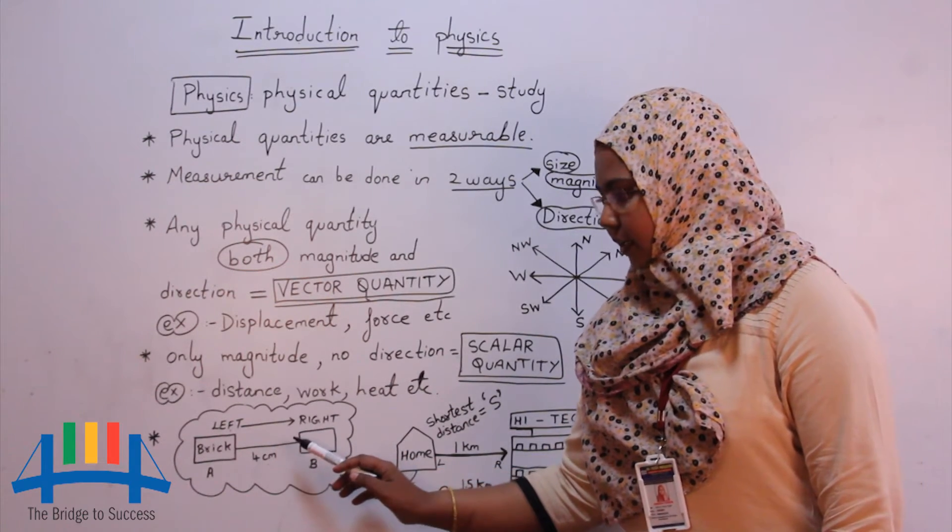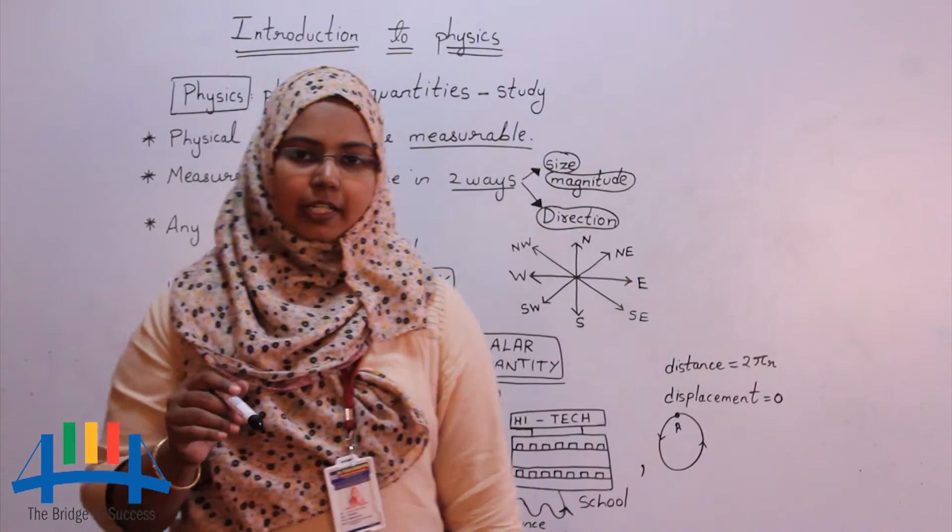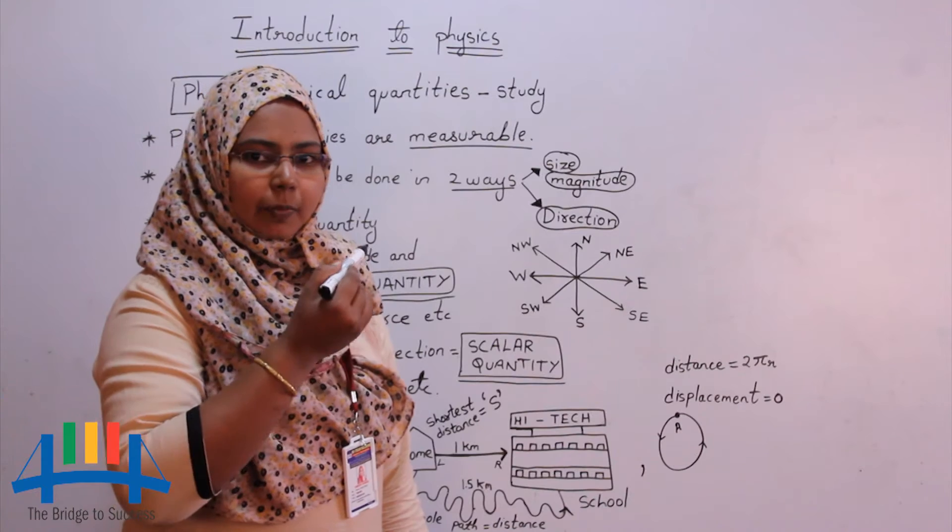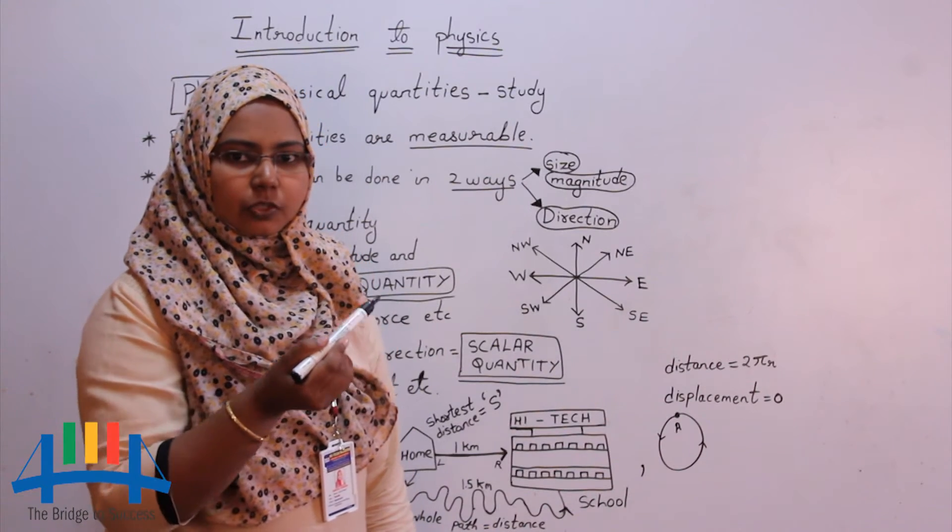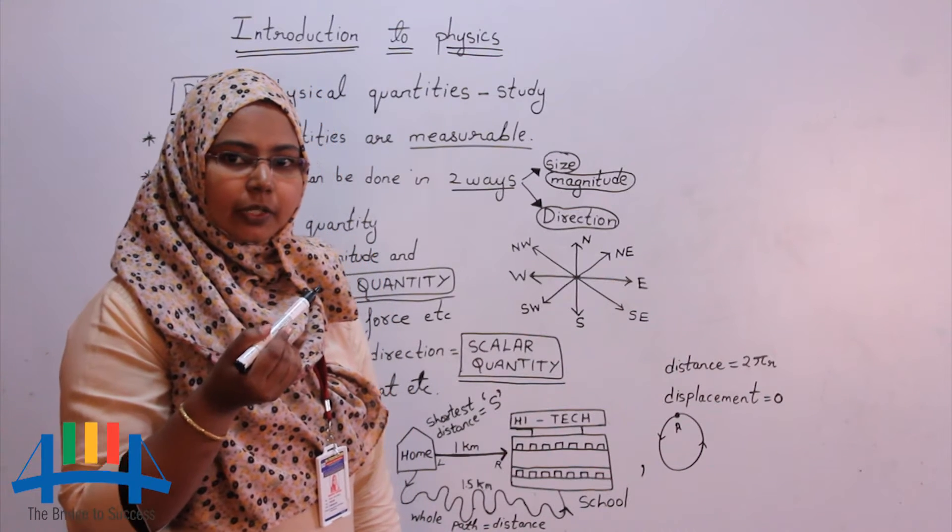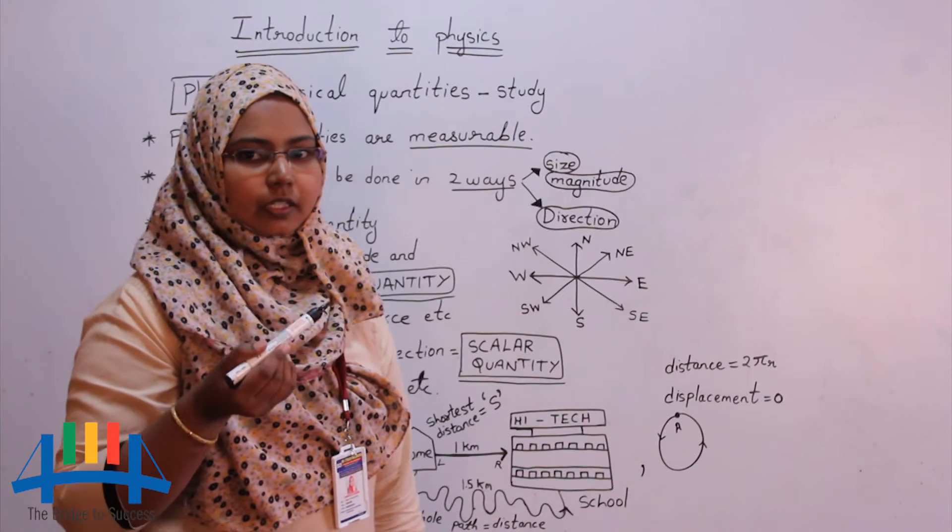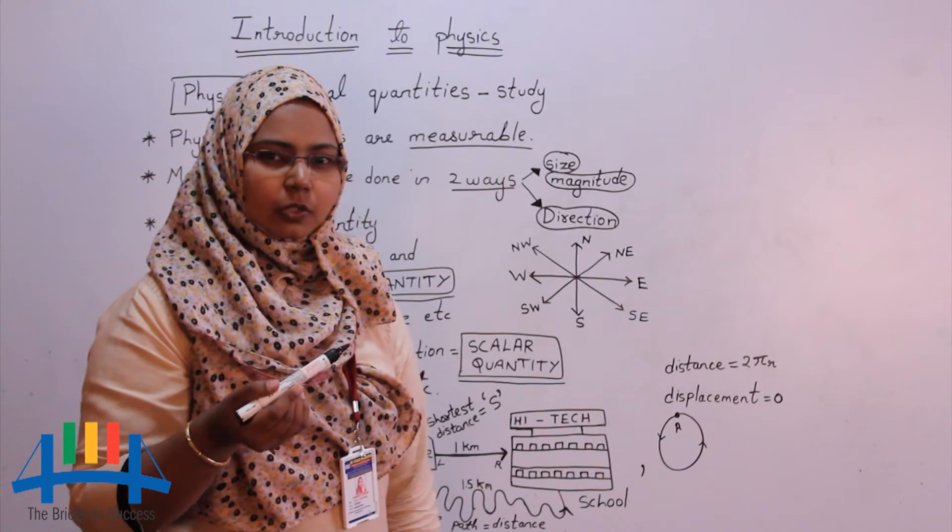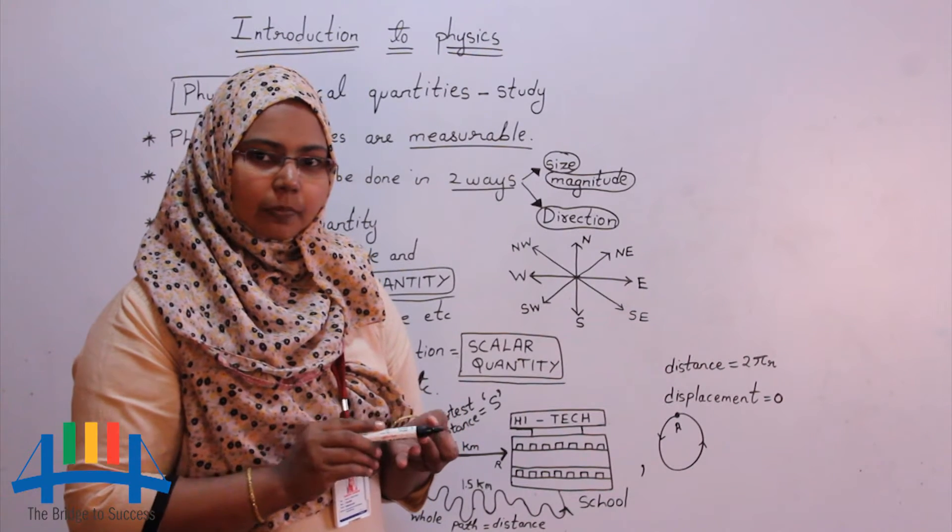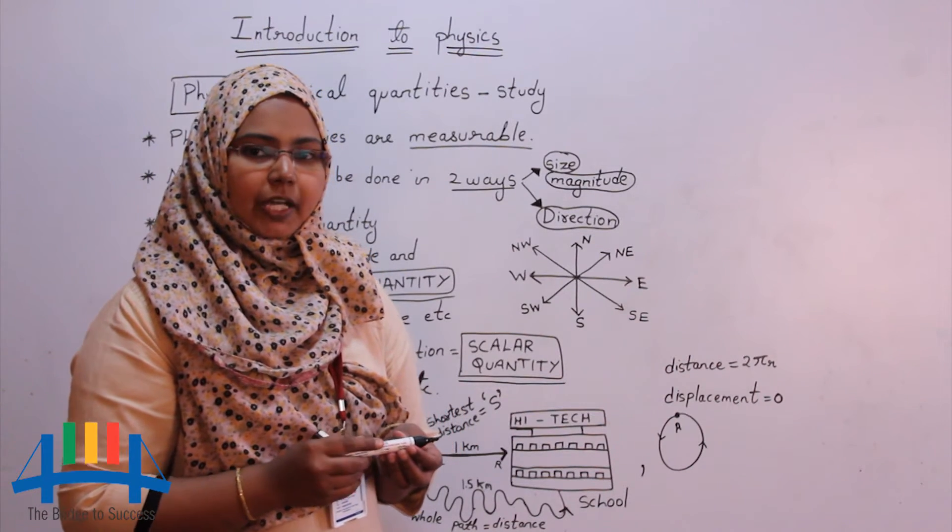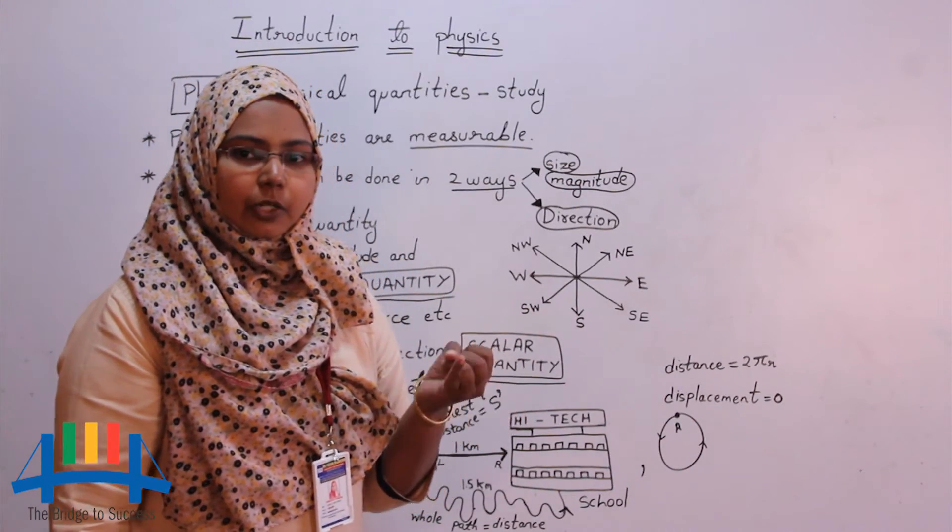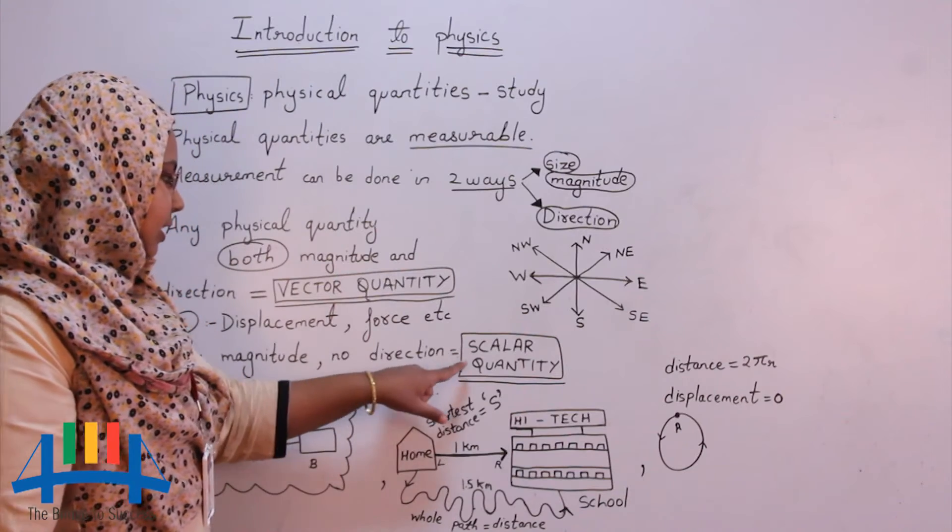Instead of drawing a diagram, if I just say you that I have displaced the brick 4 cm from A to B, from this sentence you only get the information about the magnitude. The magnitude is 4 cm, but you will not be able to know the direction to which direction I have moved the brick. Towards the right, towards the left, up, down, you don't know. So the quantity which only gives you the magnitude but no direction is called a scalar quantity.